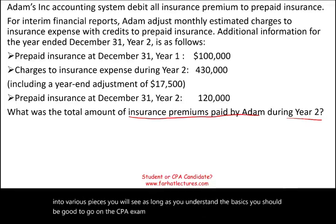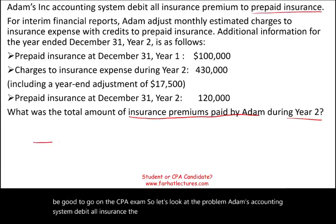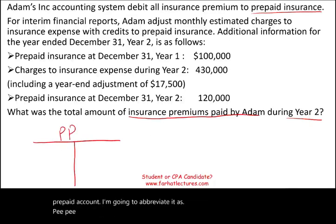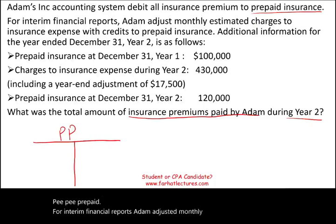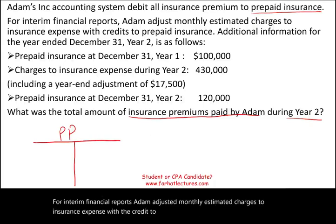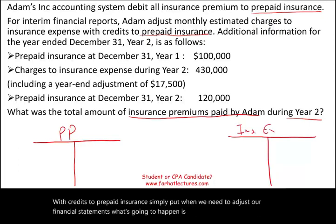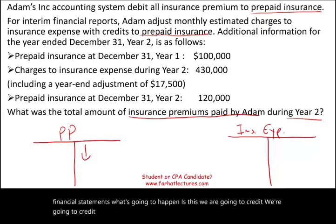Let's look at the problem. Adam's accounting system debits all insurance to prepaid — I'm going to abbreviate it as PP prepaid. For interim financial reports, Adam adjusts monthly estimated charges to insurance expense with credits to prepaid insurance. Simply put, when we need to adjust our financial statements, we are going to credit prepaid insurance, and the prepaid insurance becomes insurance expense — it expires.